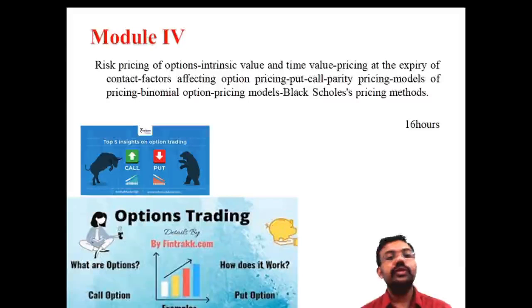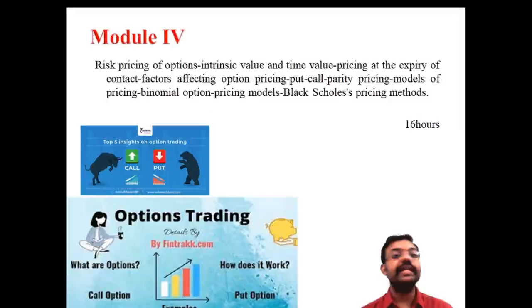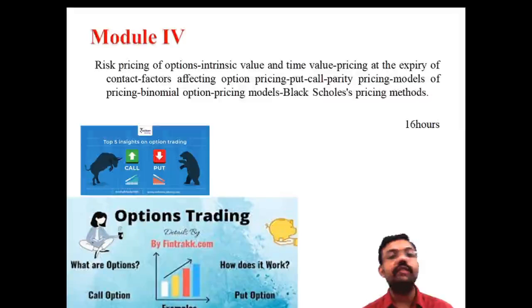The fourth module is a continuation of the option market, discussing the risk and pricing of options. Topics include the intrinsic value and time value of the option, the expiry date of the contract, American options and European options, put-call parity pricing model, the binomial pricing model, and the Black-Scholes pricing model. The fourth module discusses different models used for option pricing.